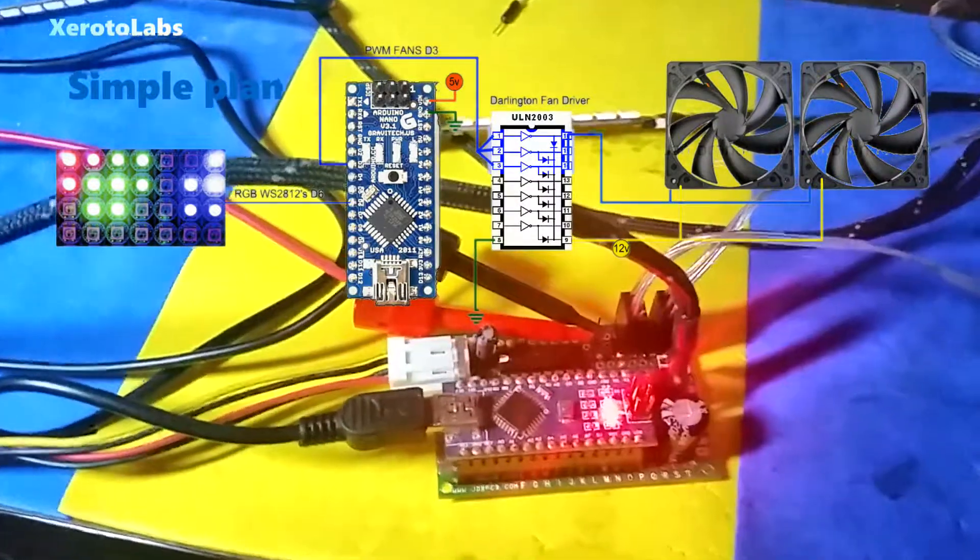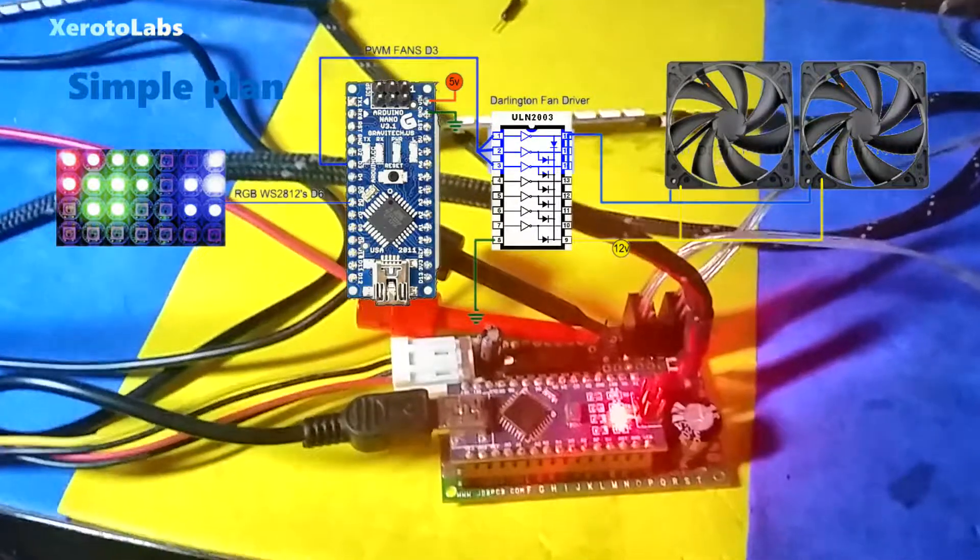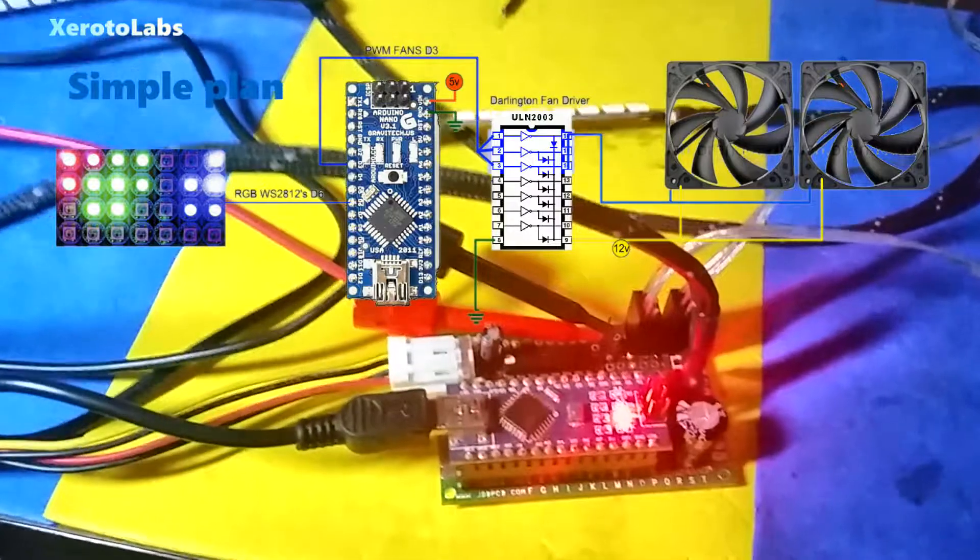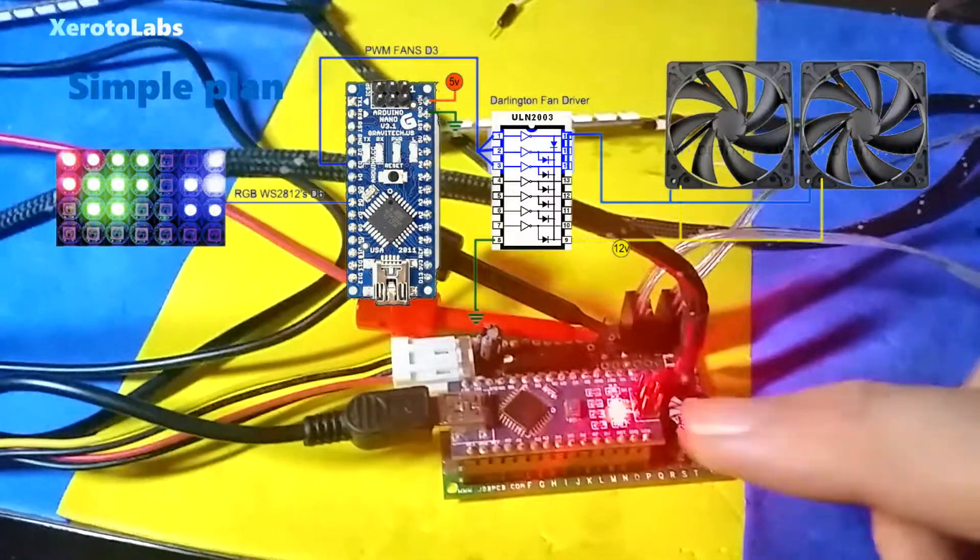A set of Darlington transistors that switches things on the ground side, quite commonly used in those small 5 volt stepper motors, but it's easily good to 12 volts.